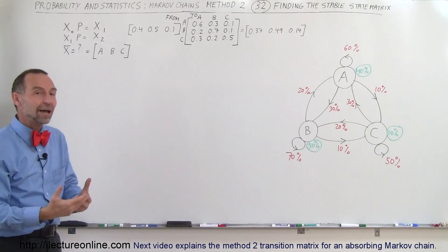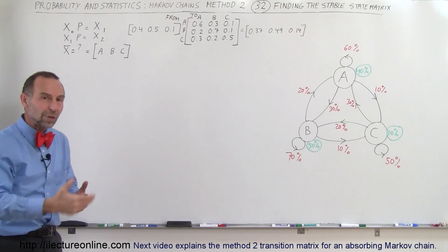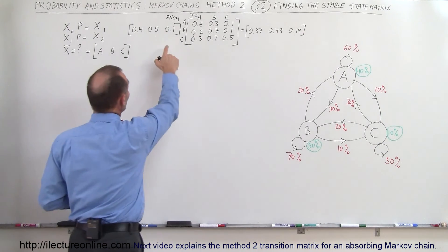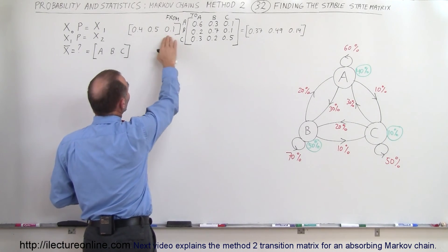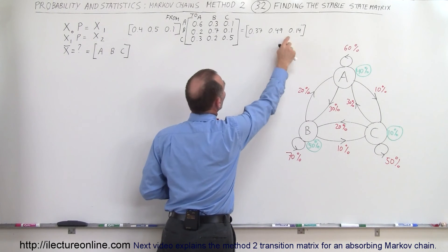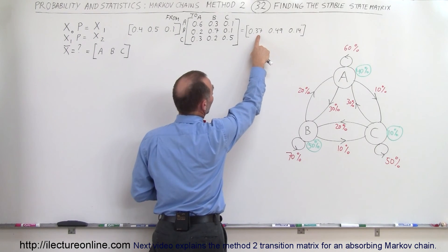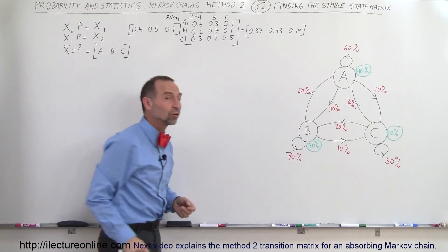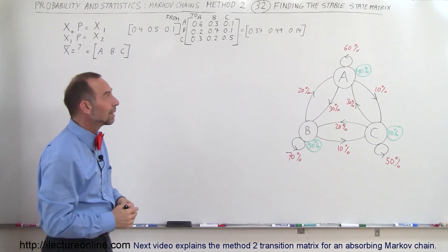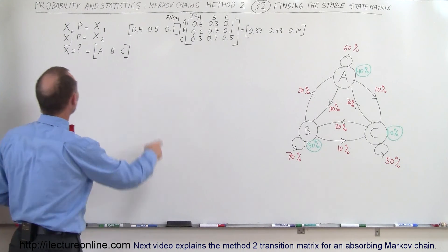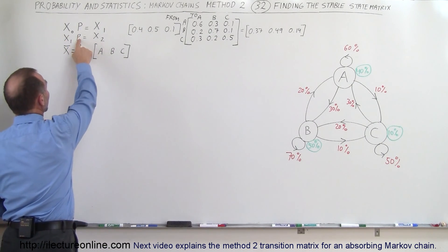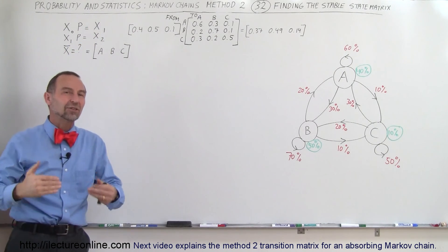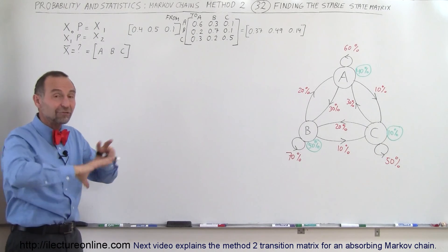Now if this plays out over time, week after week, we can see that the customer distribution will change. After the first week, from the initial state we go to a new state where only 30% of customers go to store A, 49% go to store B, and 14% go to store C. That's the first state after one week. We can continue doing that to find the second state, multiplying the first state matrix times the transition matrix, and keep doing that until eventually we get the final stable state.